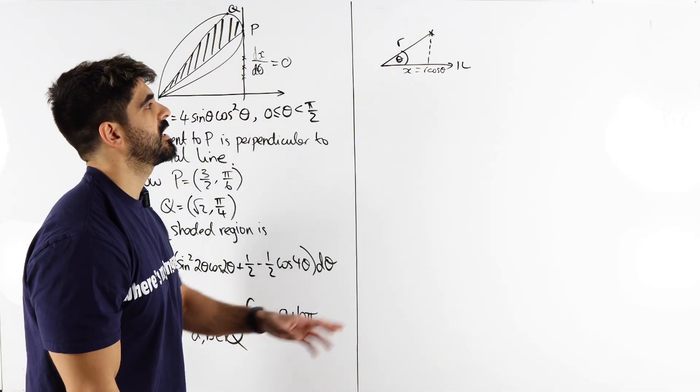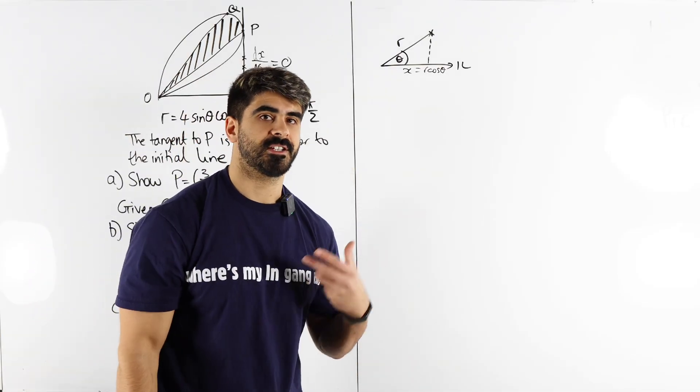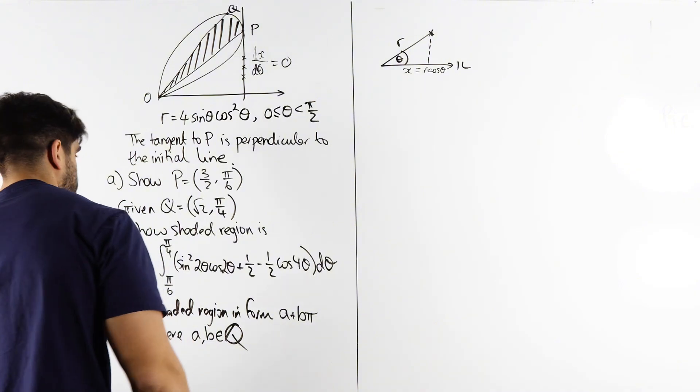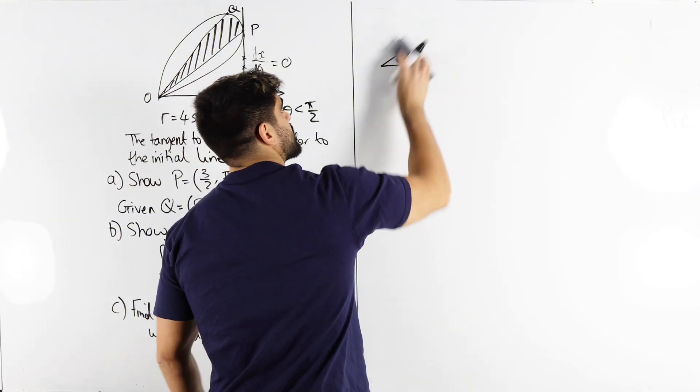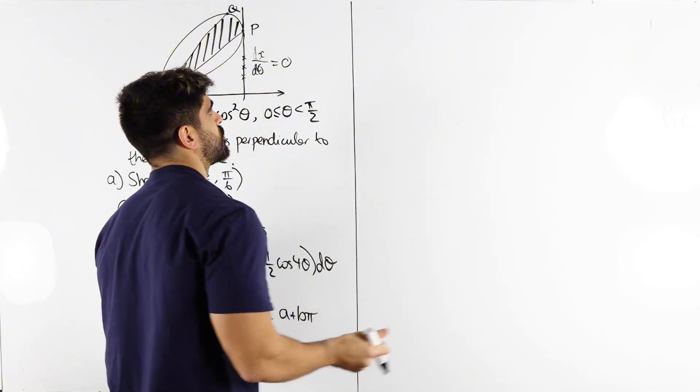Okay so we're saying the rate of change of r cos theta has to be zero. So let's start with that. x equals r cos theta.